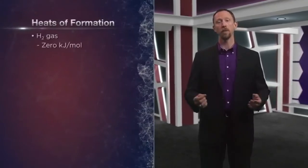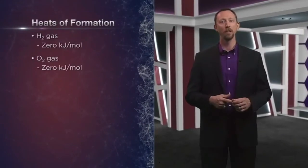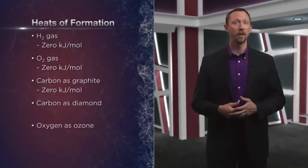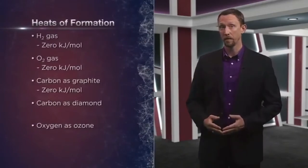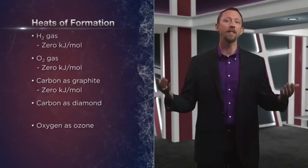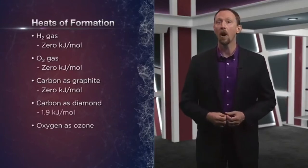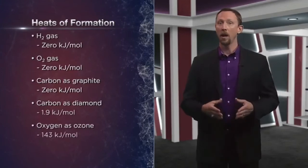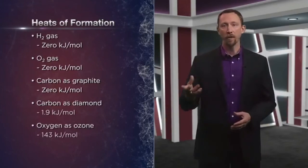Here are a few heats of formation: H₂ gas is zero kJ/mol, O₂ gas is zero kJ/mol, and carbon as graphite is zero. Now, how about carbon as diamond or oxygen as ozone? Trick question — diamond and ozone may be pure carbon and oxygen, but they're not in the standard state. Ozone and diamond aren't the most stable form of these elements at standard temperatures and pressures. Diamond actually has a non-zero heat of formation: rearranging the atoms in graphite to form diamond requires the input of about 1.9 kJ/mol of carbon. And turning diatomic oxygen into ozone requires the input of 143 kJ/mol — ozone is clearly much less stable than diatomic oxygen, a fact we've predicted many times in the course.